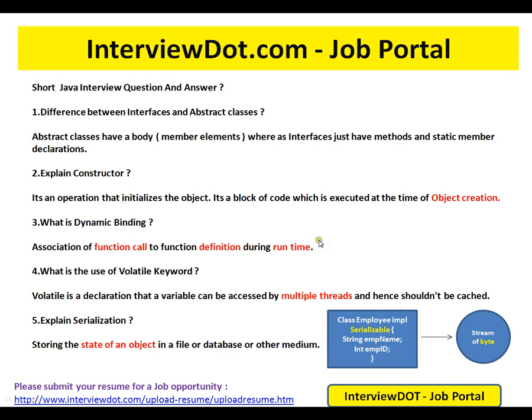What is dynamic binding? Dynamic binding is the association of a function call to a function definition during runtime. The overriding concept helps in dynamic binding — based on the object invoked, the method call will land in the particular method corresponding to that object.